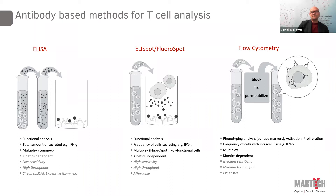ELISPOT and FluoroSPOT, then — it's a functional analysis on a single cell level. We look at each cell which secretes a cytokine, such as interferon gamma. It's multiplexed in the FluoroSPOT application — up to four cytokines can be analyzed. So you can look at polyfunctional T-cells producing one, two, three, or four cytokines simultaneously. It's kinetics-independent, so we capture all the cytokine released during the time of the assay. It's high sensitivity, high throughput, and it's affordable.